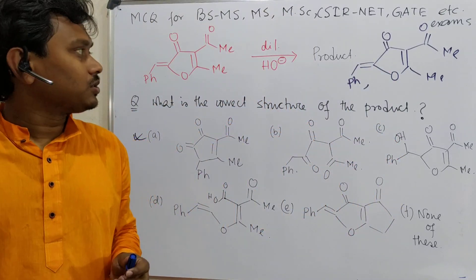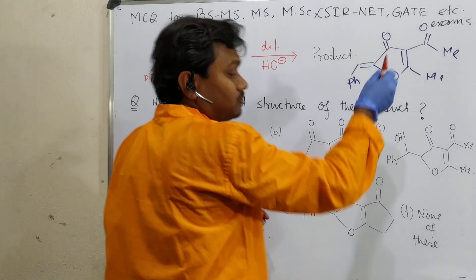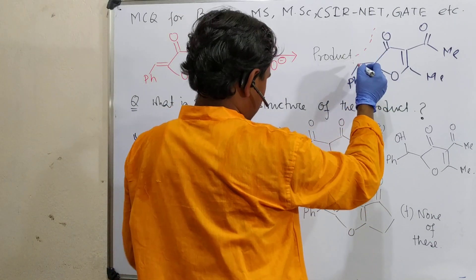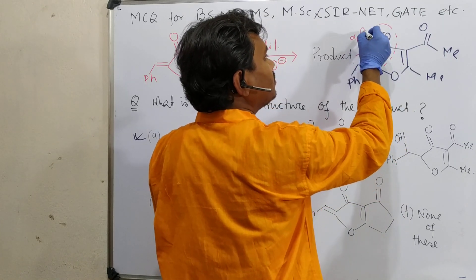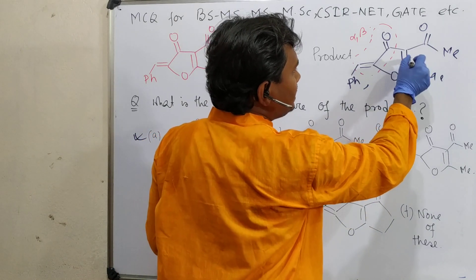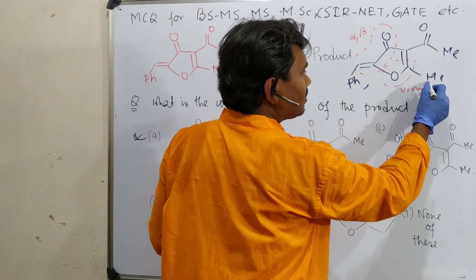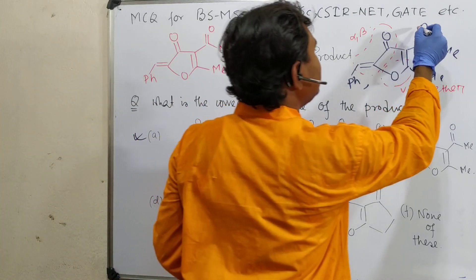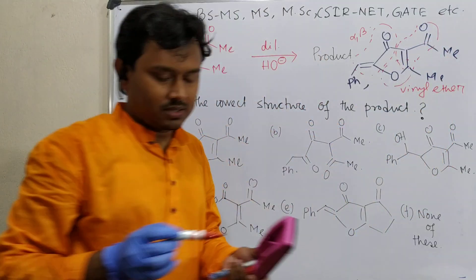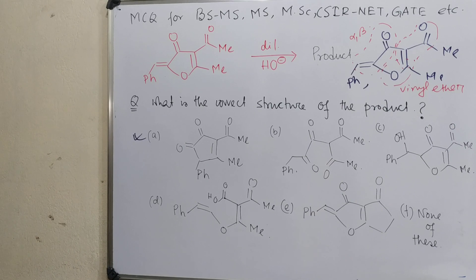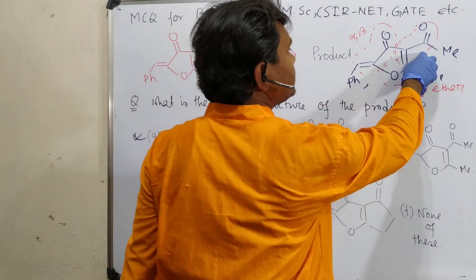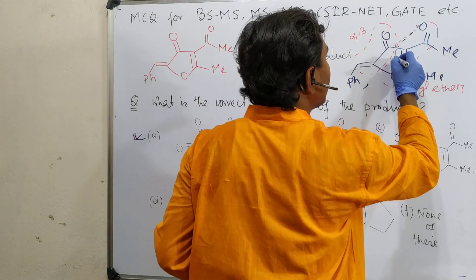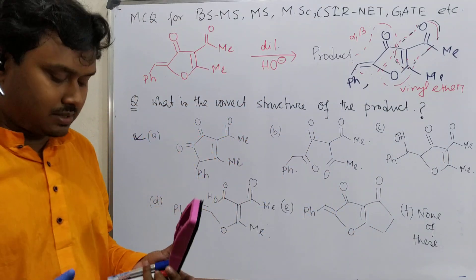Now see what types of functional groups are present in this molecule. This part is an alpha-beta unsaturated carbonyl compound. This is a vinyl ether. And this is also an alpha-beta unsaturated carbonyl compound. So lots of functional groups are present. Now if we focus a little more deeply...